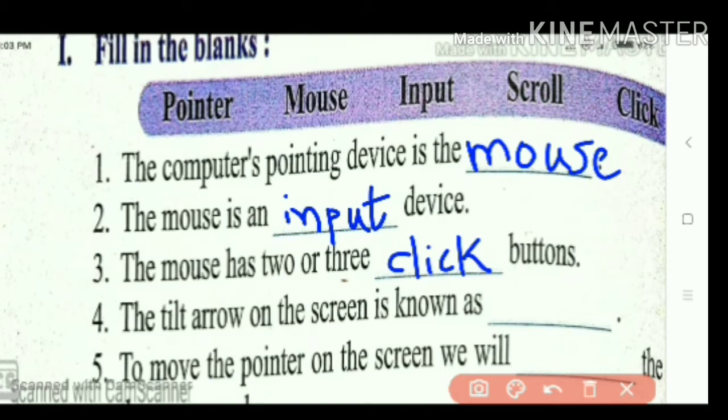The tilt arrow on the screen is known as pointer. P-O-I-N-T-E-R. To move the pointer on the screen, we will... the mouse. To move the pointer, what we will do? Scroll. S-C-R-O-L-L, scroll.